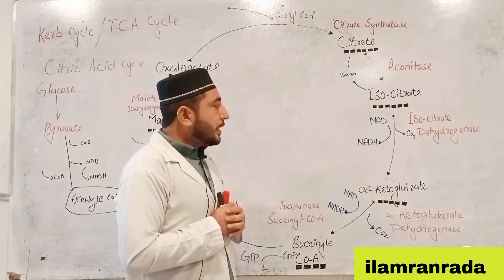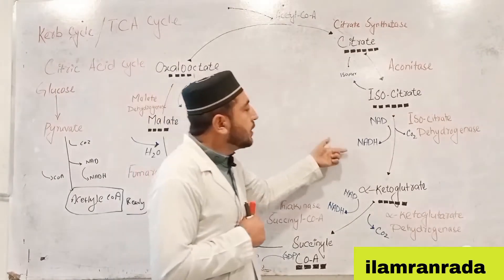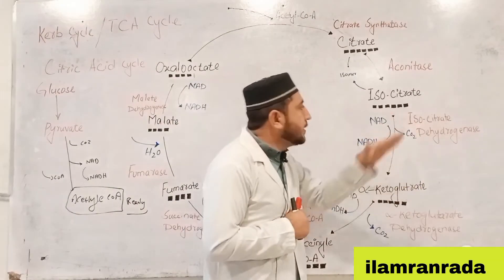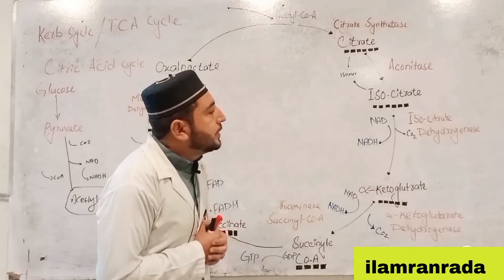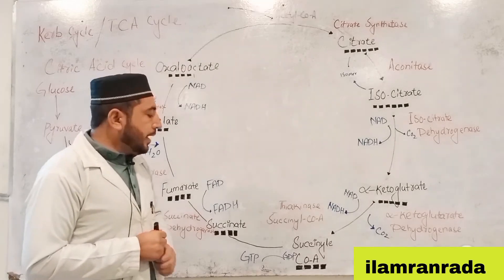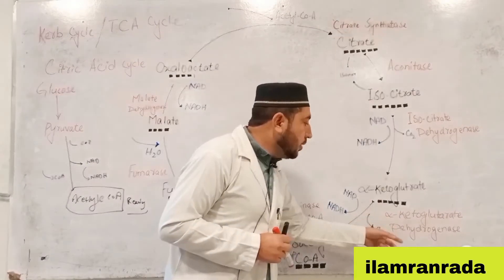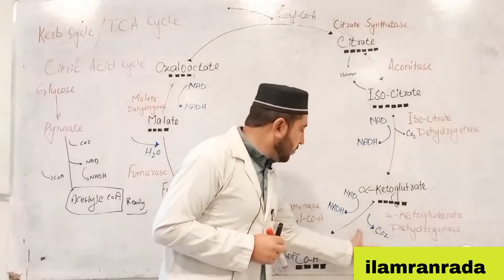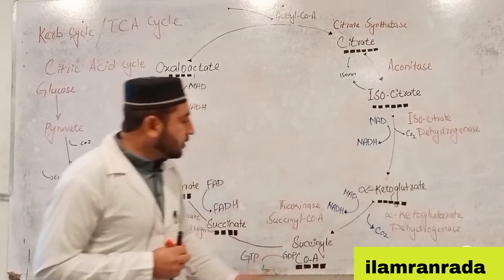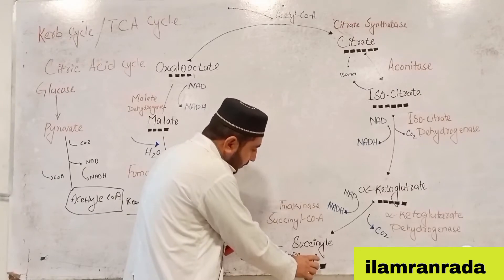Students, during this step the six-carbon isocitrate is oxidized: hydrogen is removed and carried as NADH, and carbon dioxide is released. The enzyme isocitrate dehydrogenase catalyzes this reaction. Then alpha-ketoglutarate is further decarboxylated by alpha-ketoglutarate dehydrogenase, releasing another carbon dioxide and producing NADH.